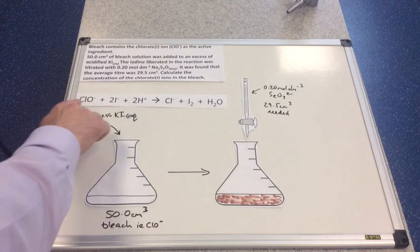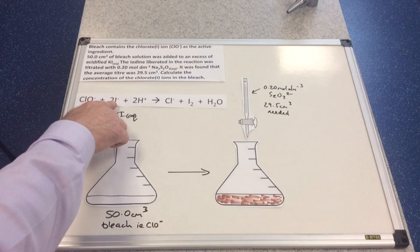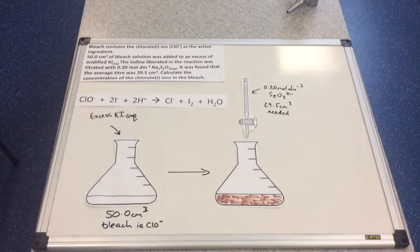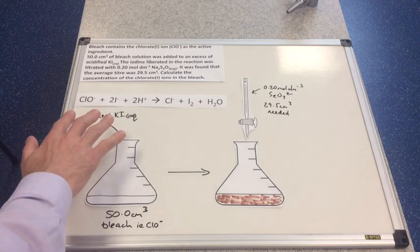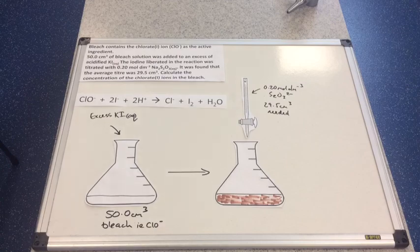The equation shown is the one that takes place inside the flask when KI is oxidized by the chlorate(I) ion in the bleach. The other equation — the titration equation — you would need to know off by heart for the exam. Pause the video and have a go at the calculation before we go through it.